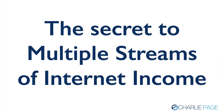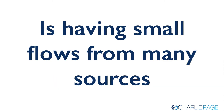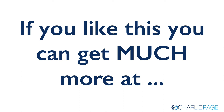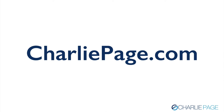The secret to multiple streams of Internet income — and I learned this many years ago, honored to be invited to participate in the book with Robert G. Allen, Multiple Streams of Internet Income — is having small flows from many different sources, more sources than most people think. Most people think if they have two or three sources of income, that's enough. I'd love to see you have 15. Start with these five and let me know how it's going — I'd love to hear from you. You can get much more at charliepage.com. This is Charlie Page. Thank you for being here, thanks for watching all the way to the end, and I hope you have a great day. Please share this video if you have a moment.